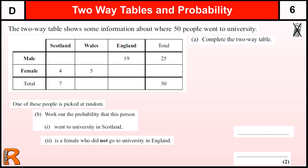Here we have a question that involves a two-way table and goes on to calculate some probabilities from it. We've got this information in a two-way table — 50 people went to university, so our total of totals is 50. We've got to complete it.